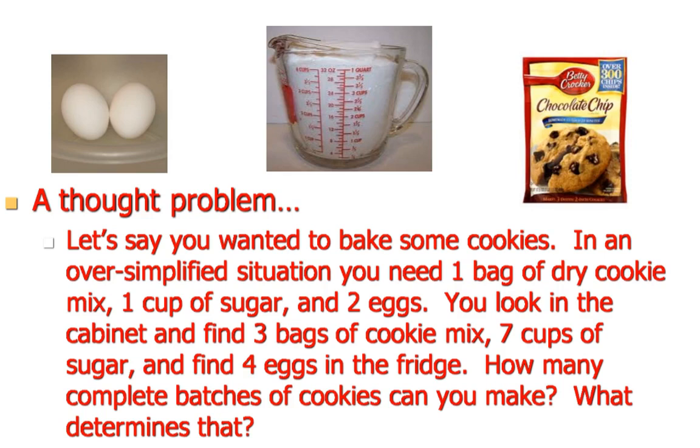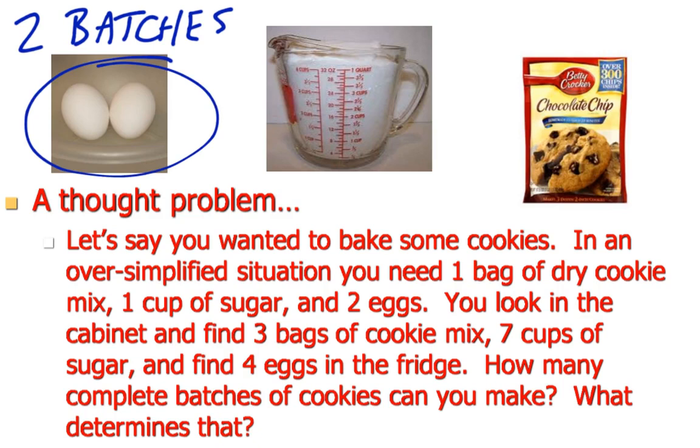Hopefully, you were able to come up with the fact that you could make two batches of cookies. And the reason we could only make two batches of cookies is because we're going to run out of eggs. Once you run out of eggs, all you're going to have left is sugar and cookie mix.